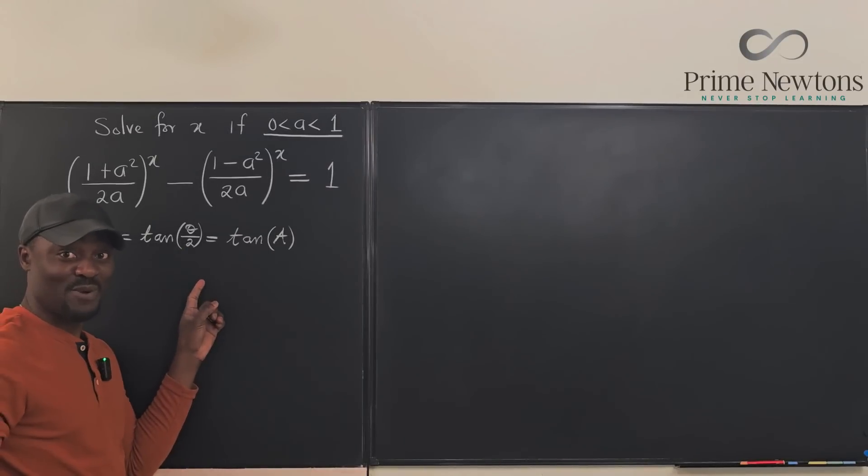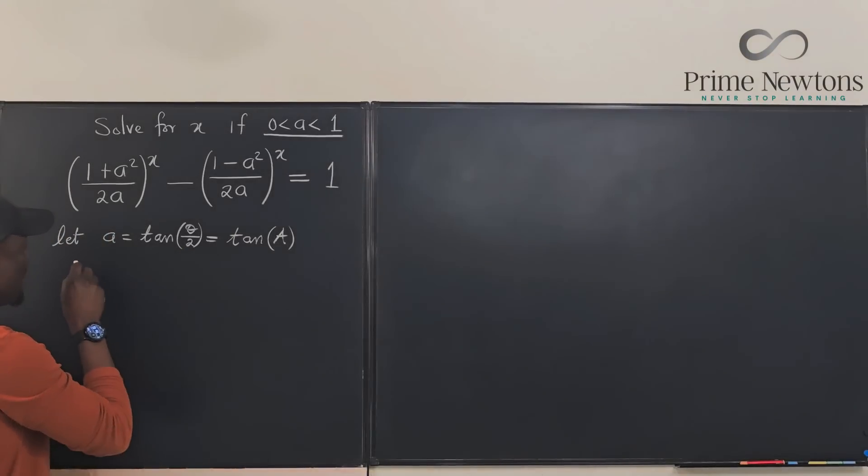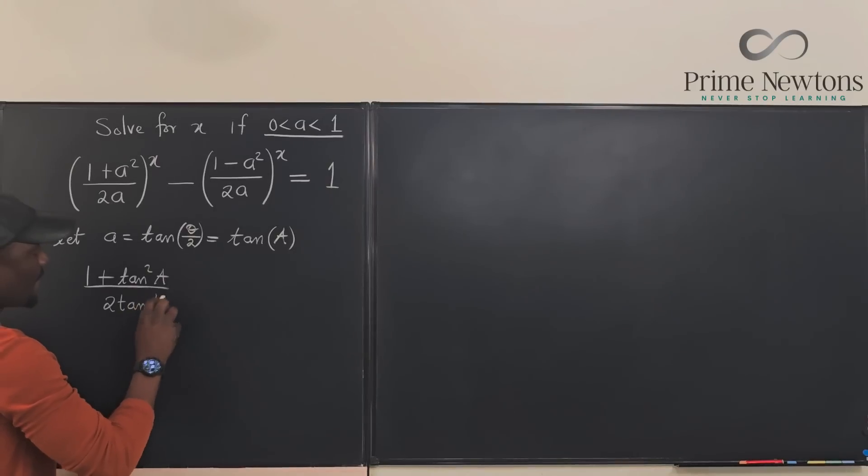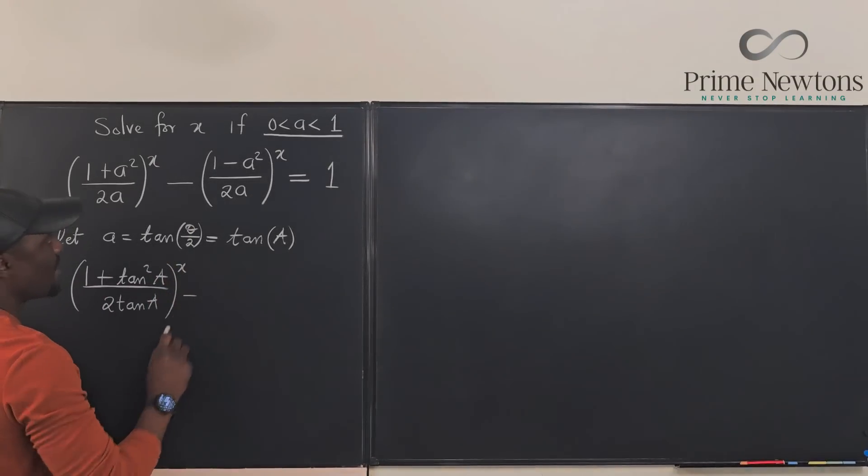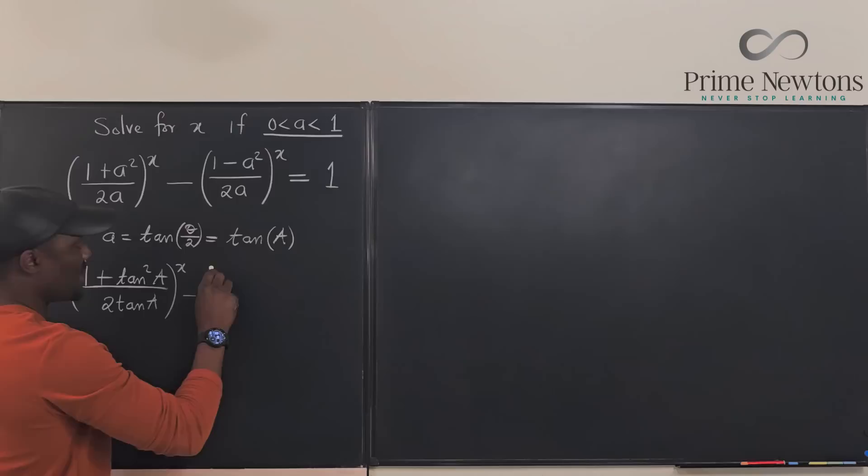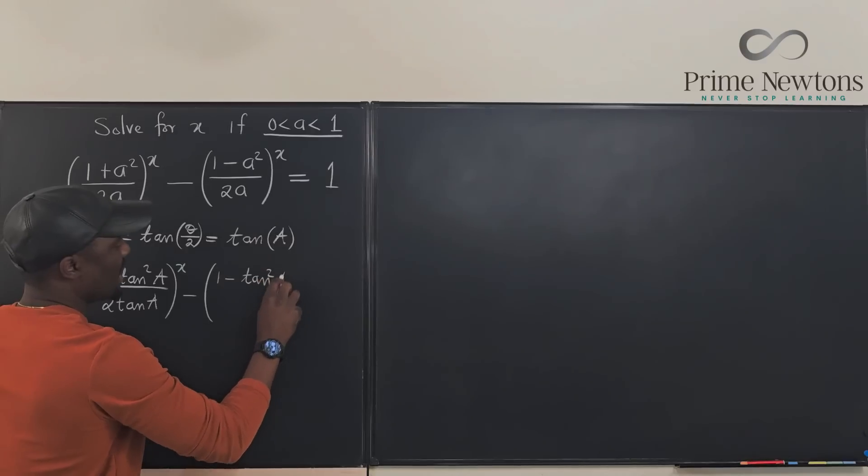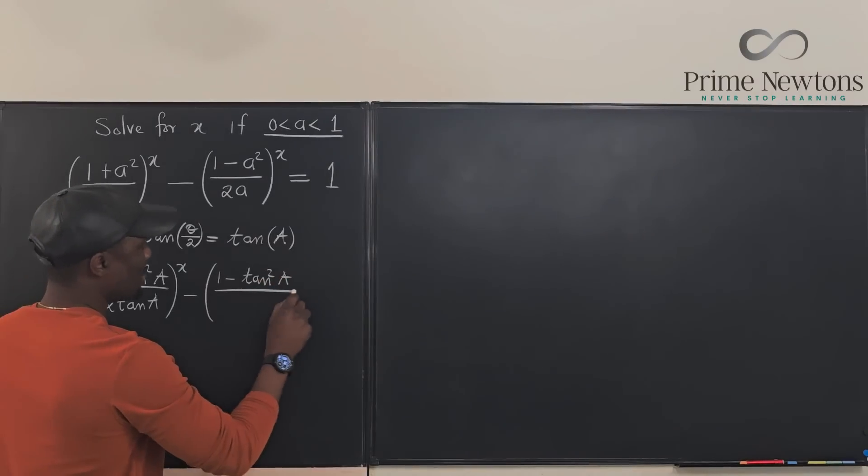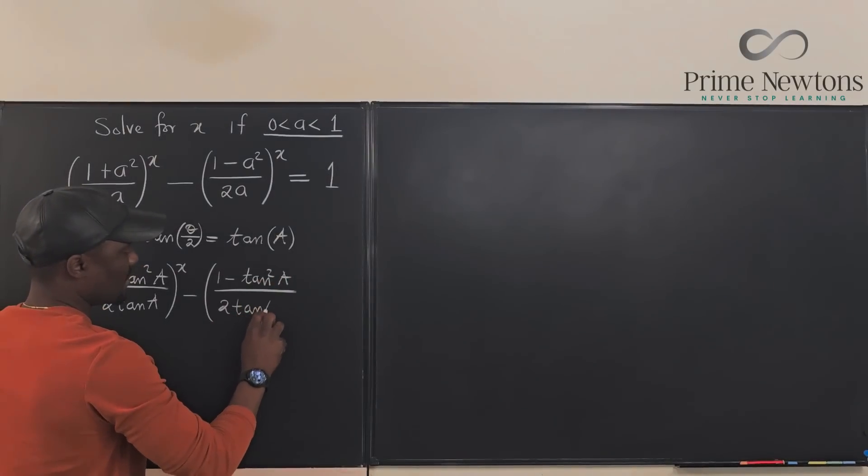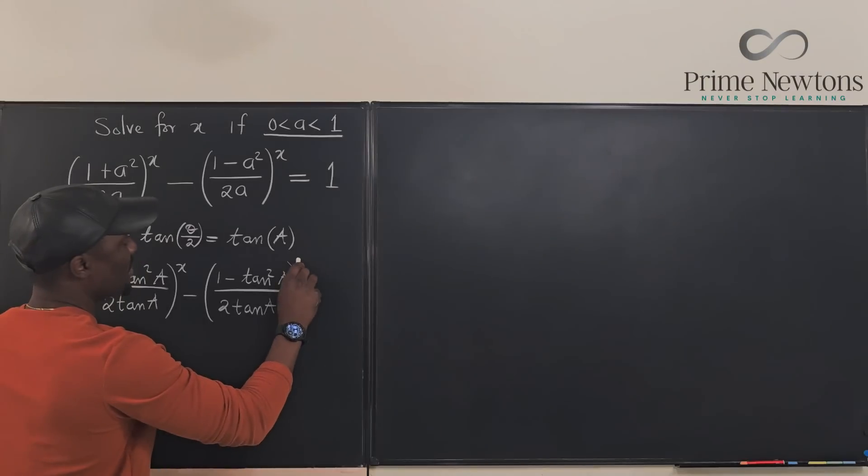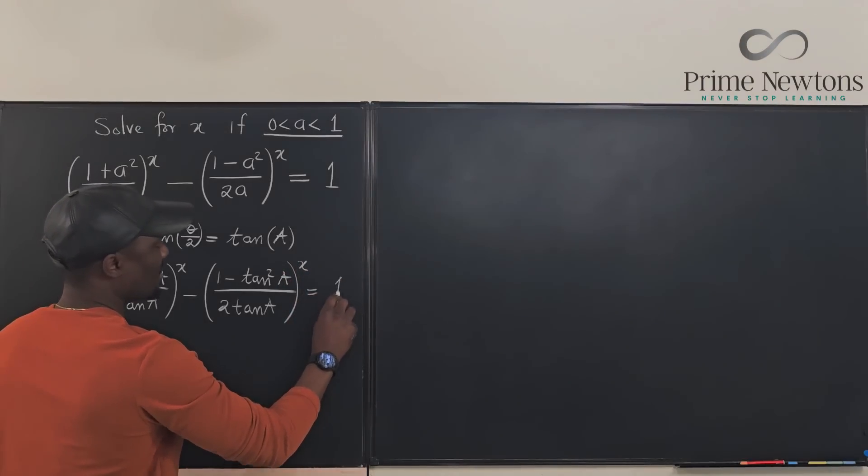Now we have 1 plus this is going to be a squared is going to be tan squared A over 2 tan A. This is raised to power x minus what do I have here? I have 1 minus tan squared A over 2 tan A. And this is also raised to power x and this is equal to 1.